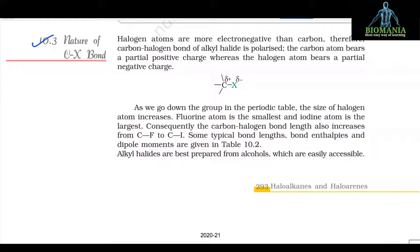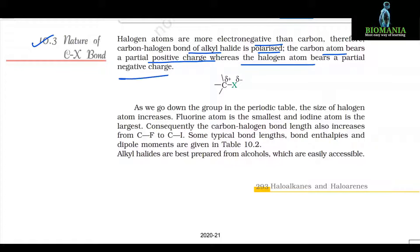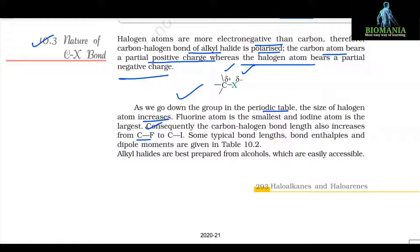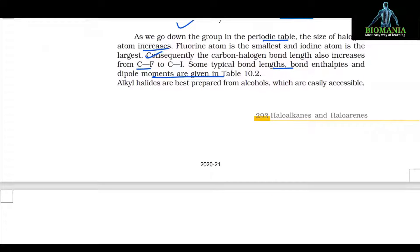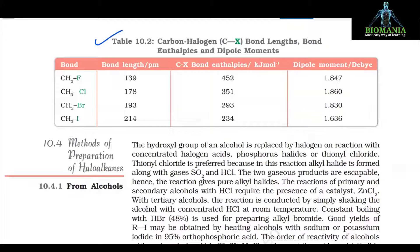10.3 Nature of C-X bond. Halogen atoms are more electronegative than carbon. Therefore, a carbon-halogen bond of alkyl halide is polarized. The carbon atom bears a partial positive charge whereas the halogen atom bears a partial negative charge. As we go down the group in the periodic table, the size of the halogen atom increases. Fluorine atom is the smallest and iodine atom is the largest. Consequently, the carbon-halogen bond length also increases from C-F to C-I. Some typical bond lengths, bond enthalpies, and dipole moments are given in table 10.2. Alkyl halides are best prepared from alcohols, which are easily accessible.